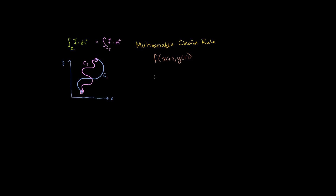so f of x(t) and y(t), then the derivative of f with respect to t is equal to the partial of f with respect to x times the derivative of x with respect to t — this is a standard derivative since x(t) is a single variable function — plus the partial of f with respect to y times the derivative of y with respect to t.